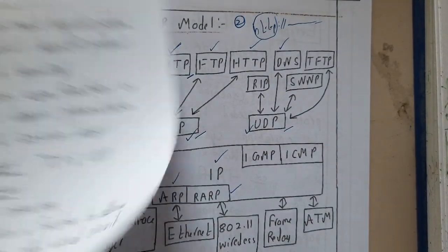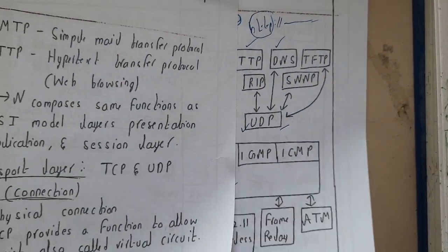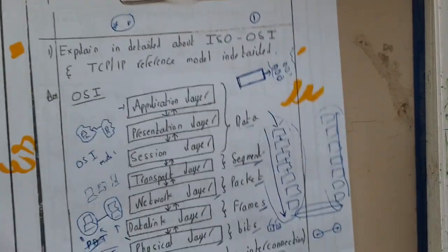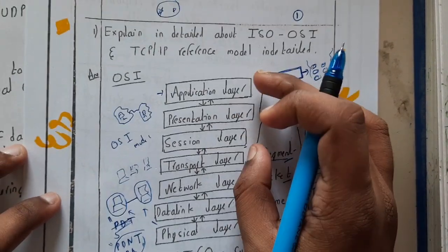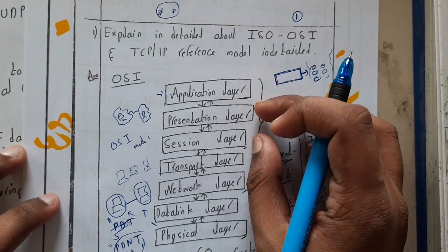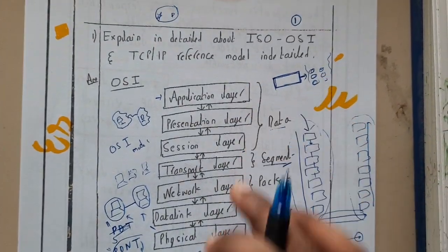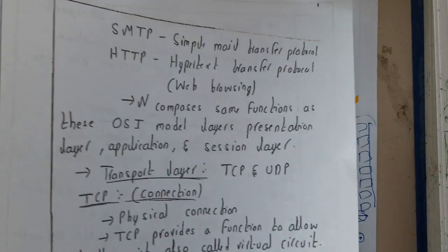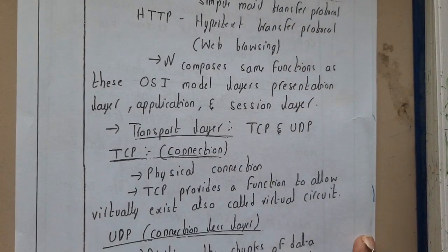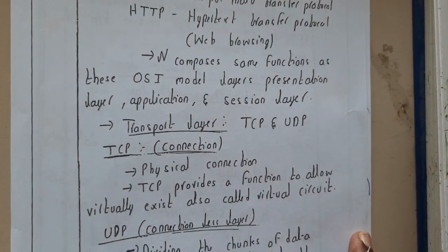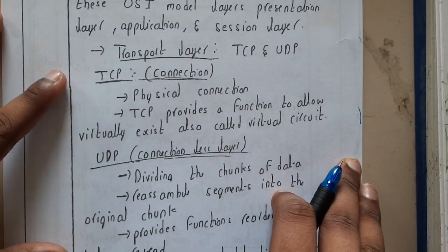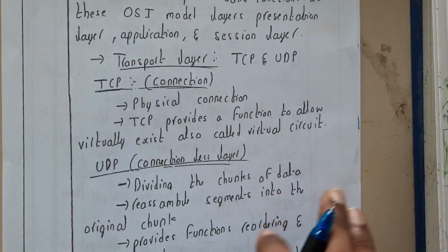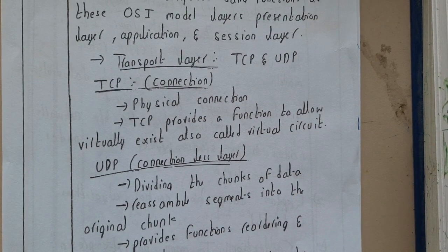This single Application layer in TCP/IP is a combination of the top three layers of the OSI model — up to and including the Session layer. All those layers are now combined into a single Application layer in the TCP/IP model.